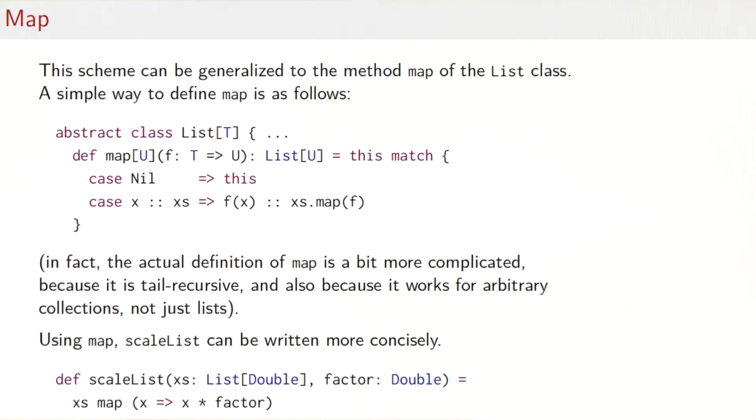In fact, the actual implementation of map in classList in the Scala standard library is a bit more complicated for several reasons. First, the actual definition is in fact tail recursive, whereas this definition isn't. You see after the call to map, we still have a call to cons. And second, the actual implementation of map works for arbitrary collections, not just lists. But for understanding map, this definition here will do very well.